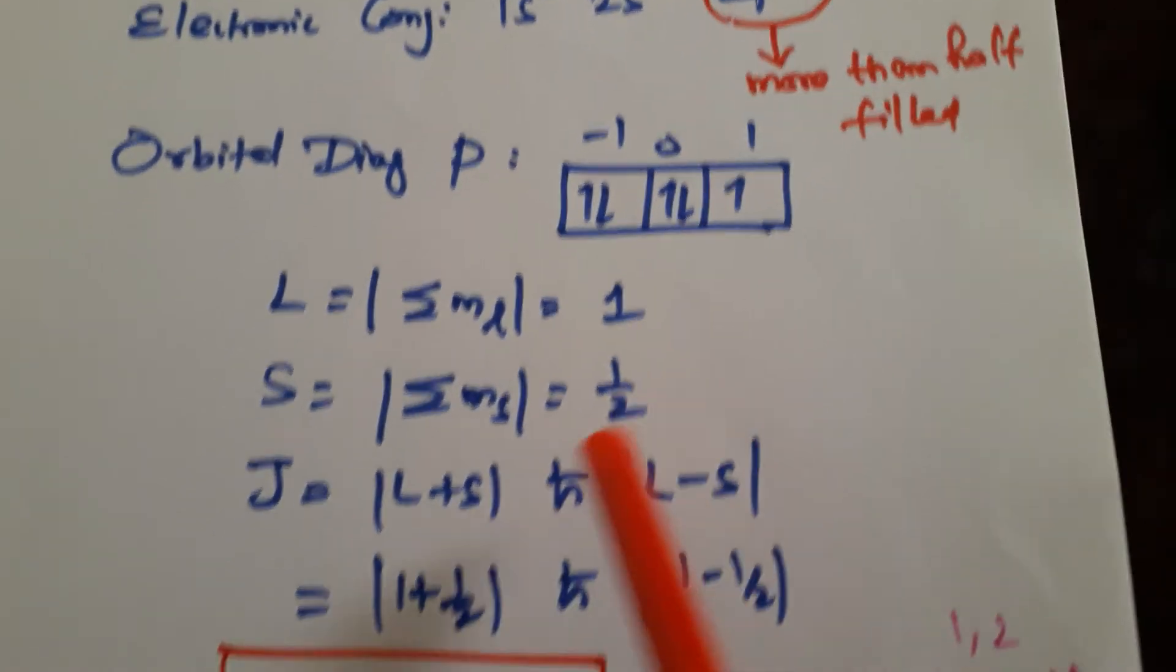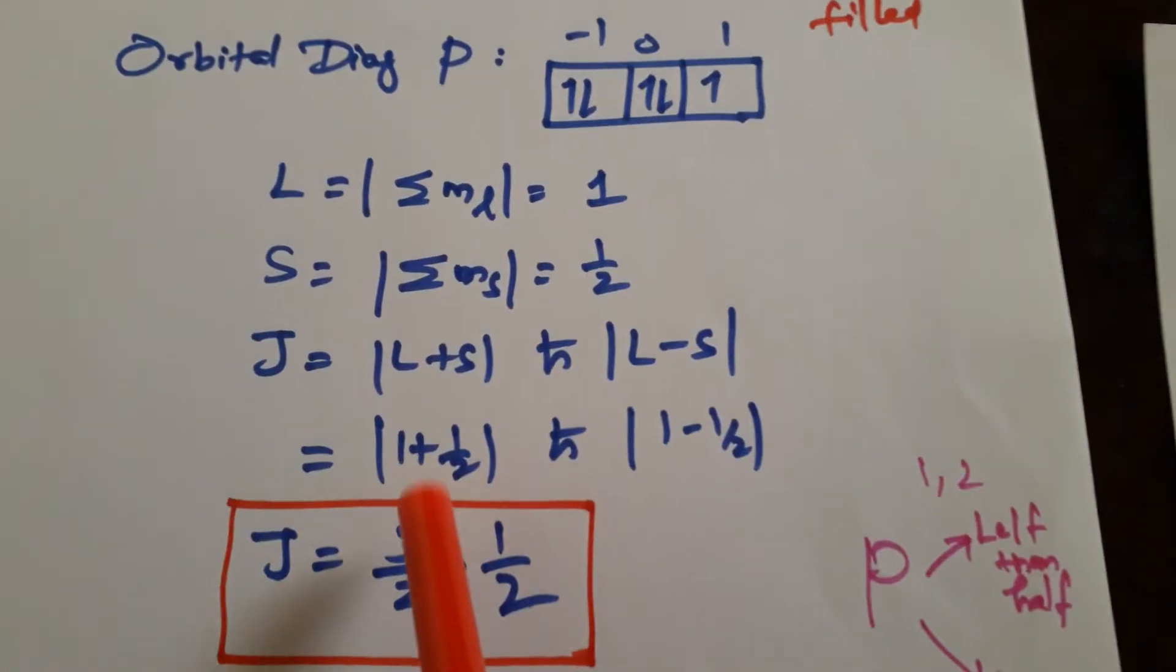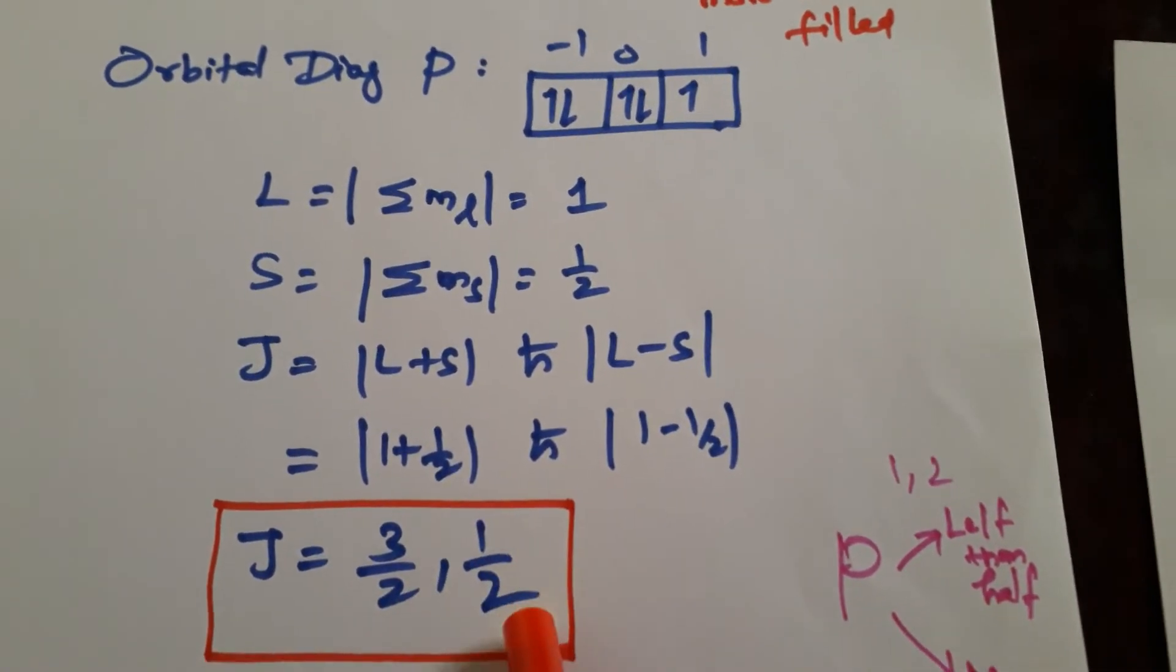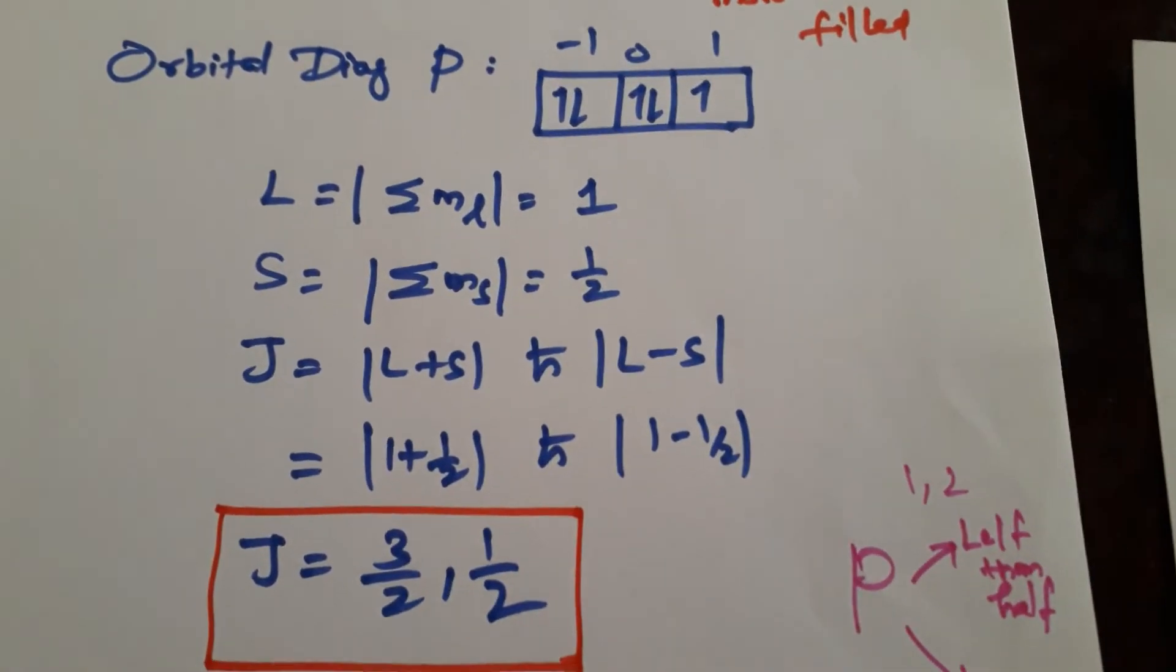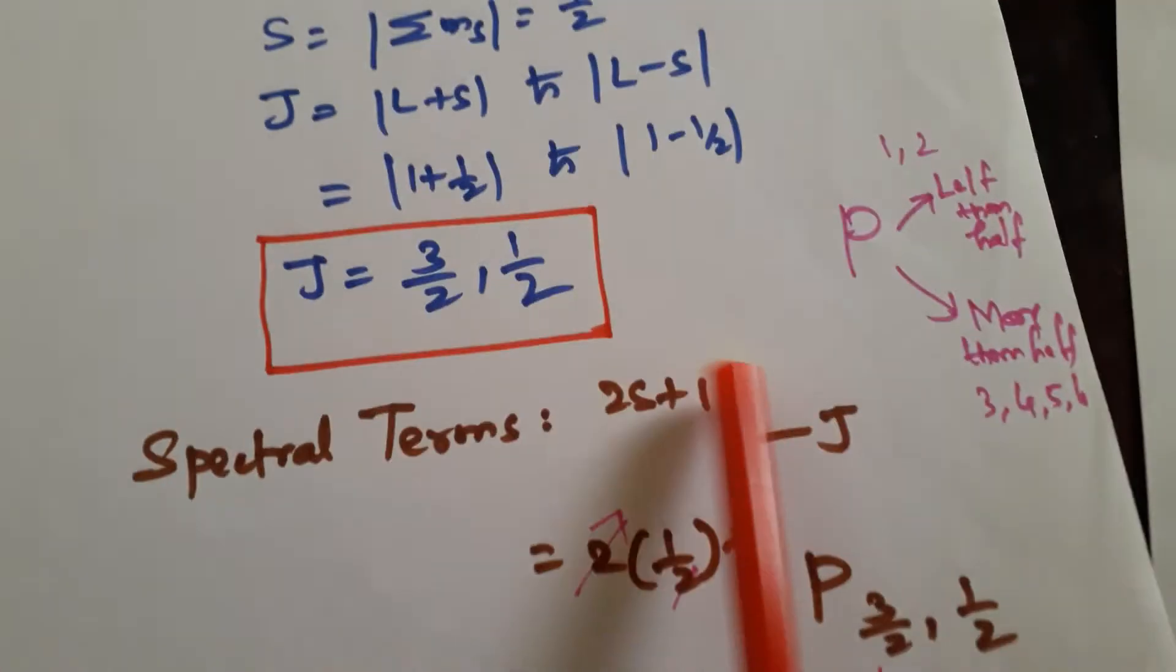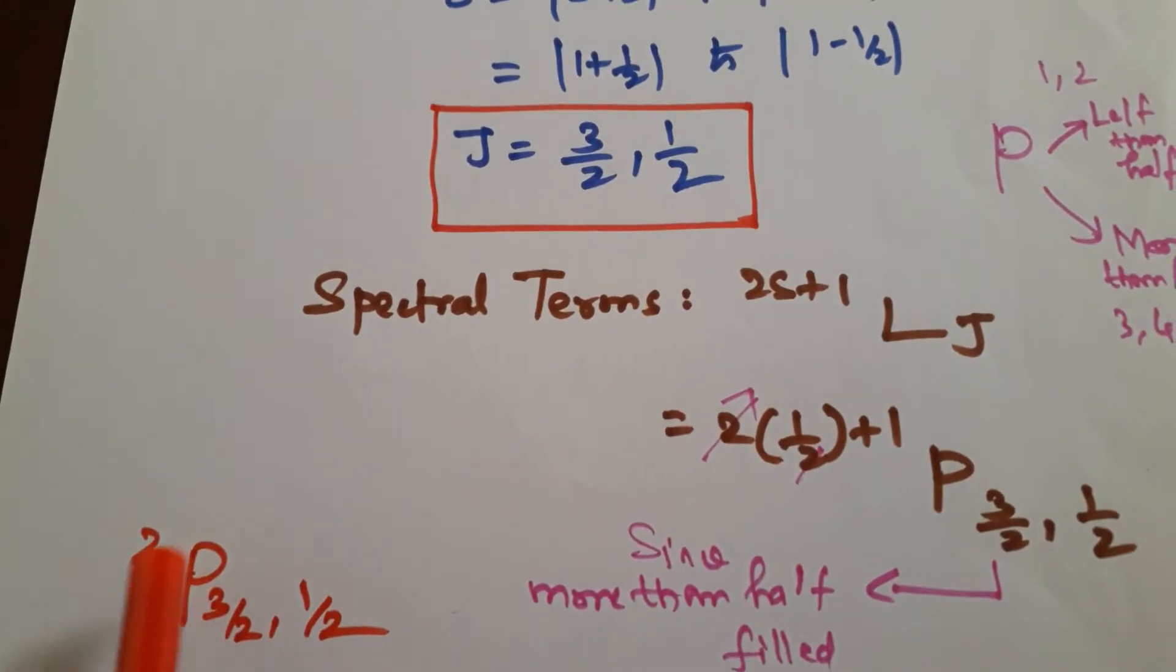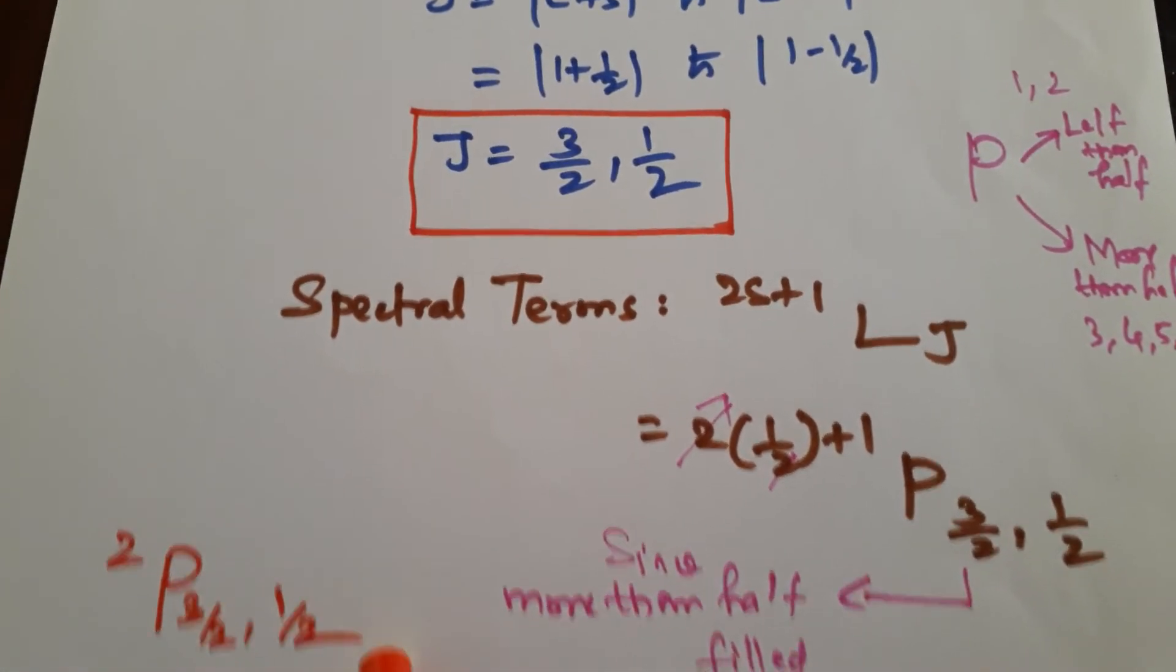J value is L plus S to L minus S. We just substitute it. You will get this value: 3/2 and 1/2. So always difference is 1. So now you get this value. This spectral term will be this. Spectral term will get this: doublet P3/2, doublet P1/2.